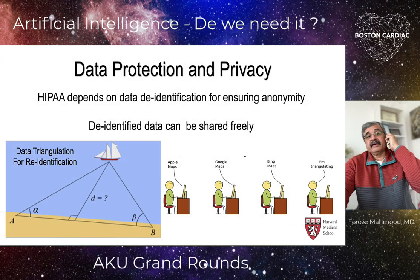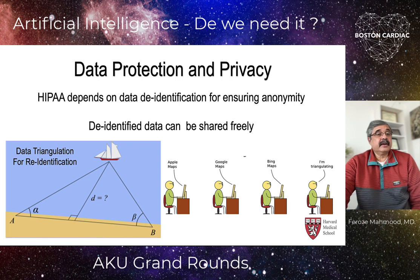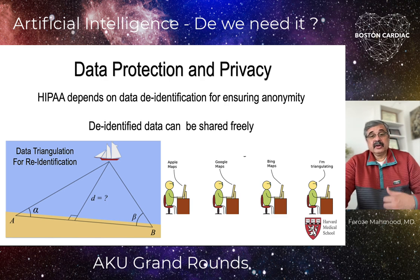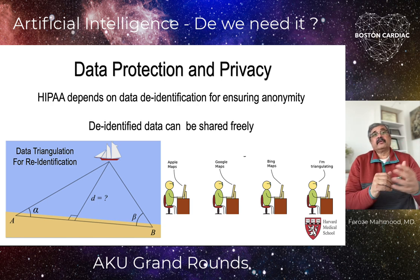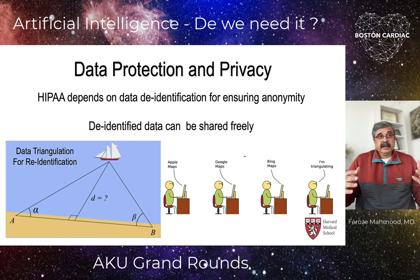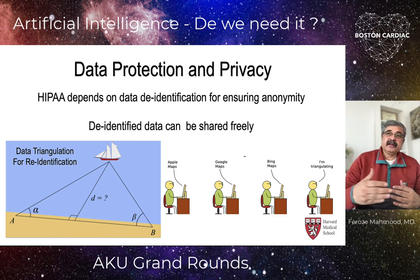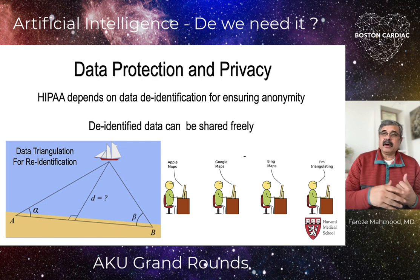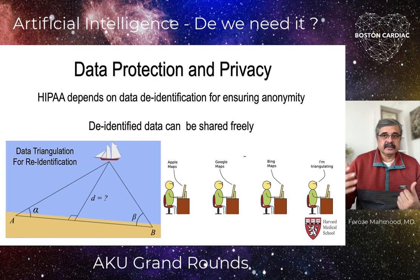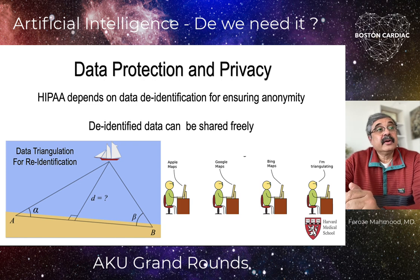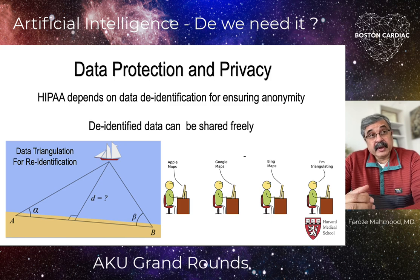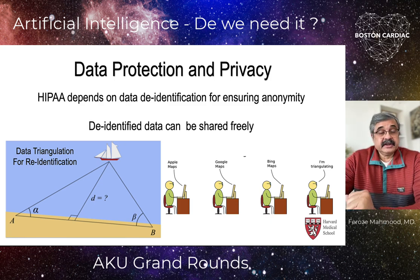Regarding data protection and privacy, HIPAA depends on data de-identification to ensure anonymity, so de-identified data can be shared freely. But as with the Royal Free Hospital case, data triangulation — based on who checked into the hospital, time of admission, car license plates, and other data — allows programs to be very accurate in identifying specific patient identities. Therefore, patient privacy and HIPAA can become quite a myth if this is used indiscriminately.